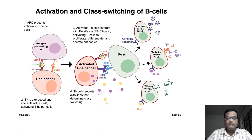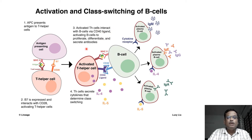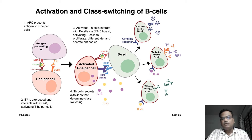Using this diagram, let us understand humoral immunity. The antigen presenting cell is the macrophage that has digested the pathogen and is carrying the antigen on its surface. The T helper cell binds with this antigen presenting cell. In the next step, the activated T helper cell interacts with B cells via CD40 ligand, activating B cells to proliferate, differentiate, and secrete antibodies. The activated B cell turns into a plasma cell, multiplies, and starts producing specific antibodies against the pathogen.